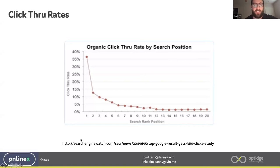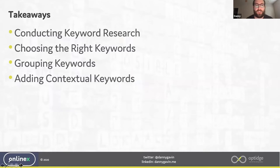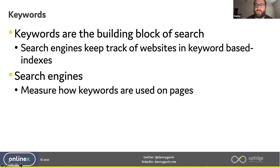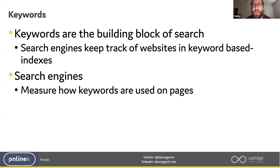Now we're getting into keyword research: conducting research, choosing the right keywords, grouping them, and adding contextual keywords. Keywords are the building blocks of search — search engines track websites in keyword-based indexes and measure how keywords are used on pages. Back in 2000, people just stuffed keywords into website code, but as Google has grown, the algorithm has become complex. Keywords remain one key ingredient, and Google measures what keywords you use on your page and how they're used.